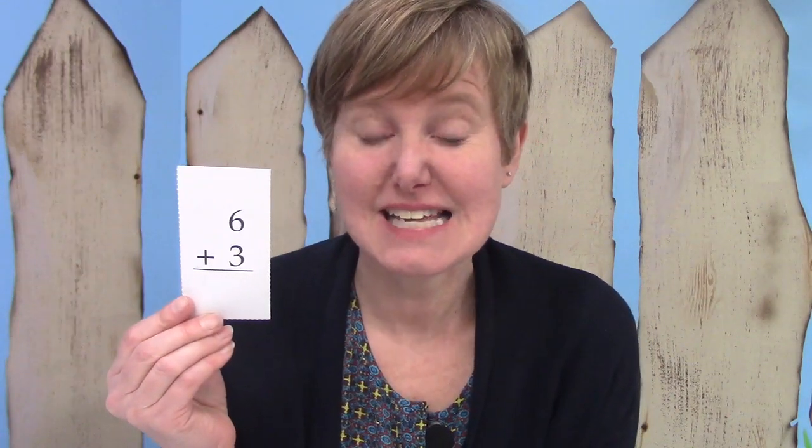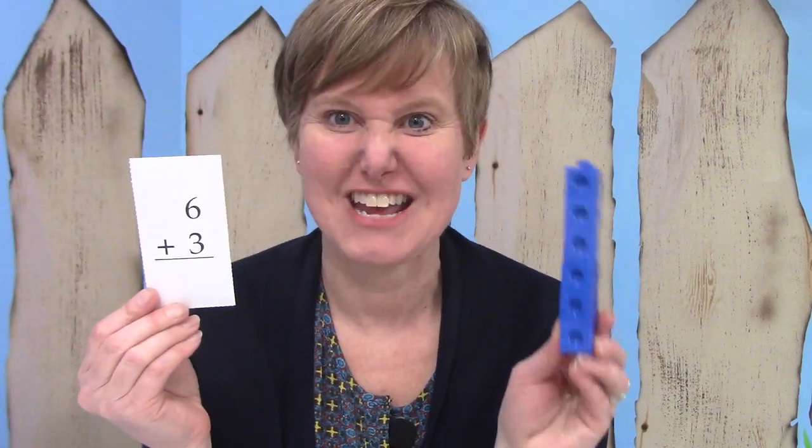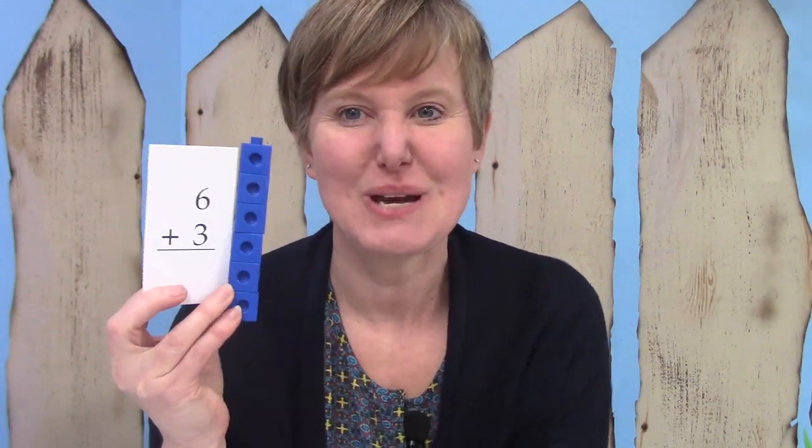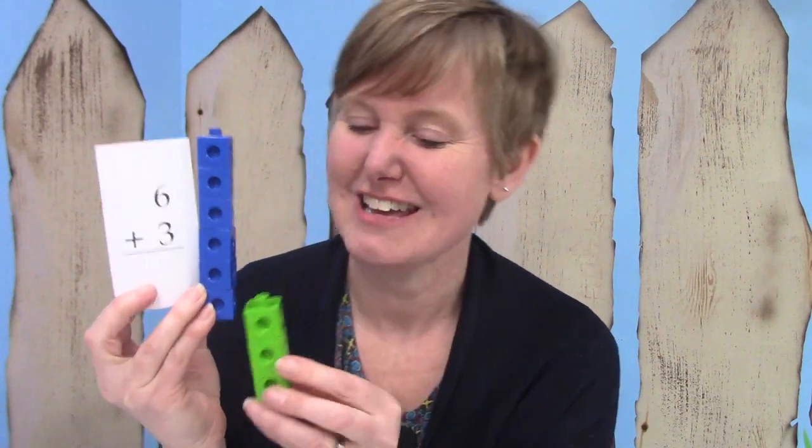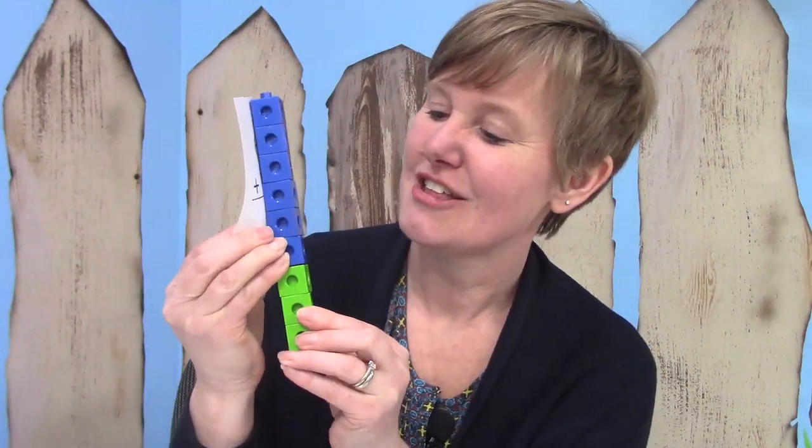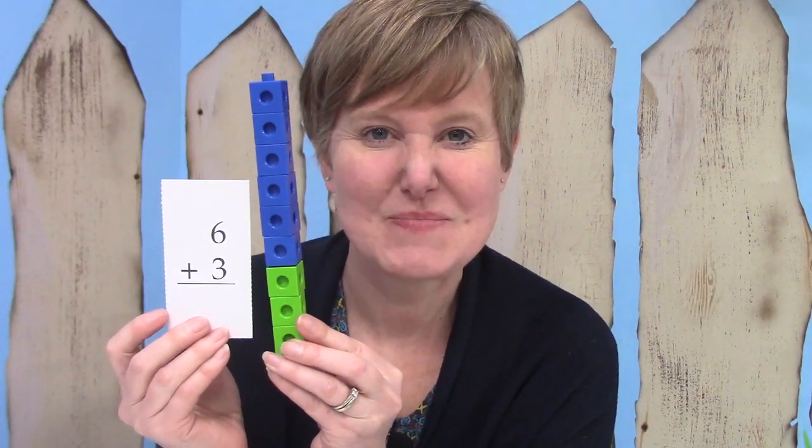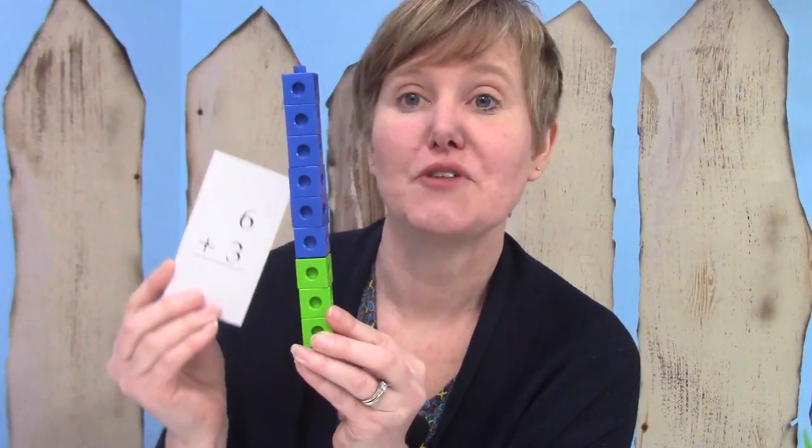This one says 6 plus 3. So I'm going to get a train of 6 blue cubes. And how many more cubes do I need to add to it? You're right. It's 3. I'm going to put 3 cubes onto my train of 6. I could just count them starting at the top going 1, 2, 3, 4, 5, 6. And then add the next 3.